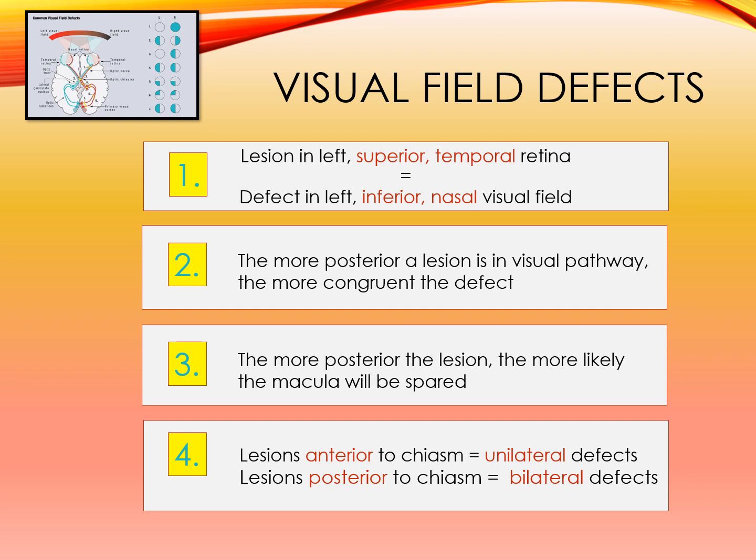Lesions in the left superior temporal retina will result in a defect in the left inferior nasal visual field. The more posterior the lesion is, the more congruent or same the defect will be in the two eyes. The more posterior the lesion, the more likely that the macula will be spared. Lesions anterior to the chiasm will result in unilateral defects, and posterior to the chiasm, bilateral defects.